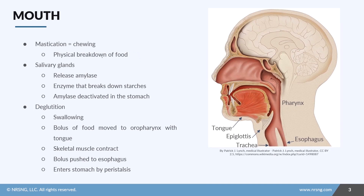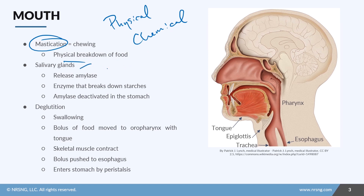Starting at the mouth, this is where physical breakdown of food occurs through the process called mastication, which is chewing. The breakdown of food happens in two ways: physical breakdown and chemical breakdown. The salivary glands help the chemical process. This is where amylase is released — an enzyme used to break down starches. Once amylase reaches the stomach, it is actually deactivated.